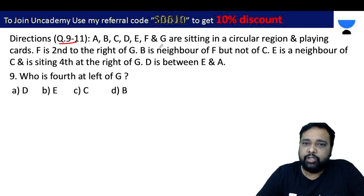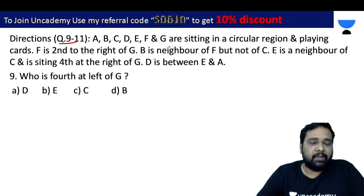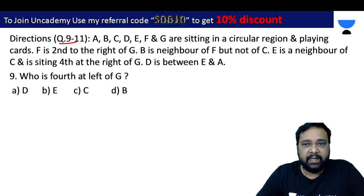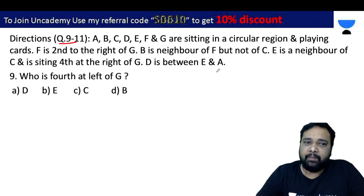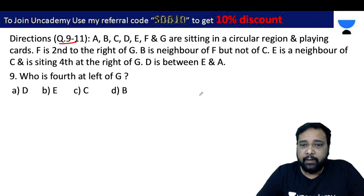So, 9 to 10. A to G — A, B, C, D, E, F, G. We are talking about 7 people sitting in a circular arrangement.